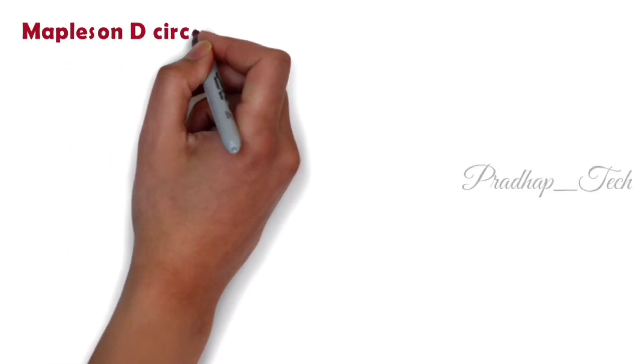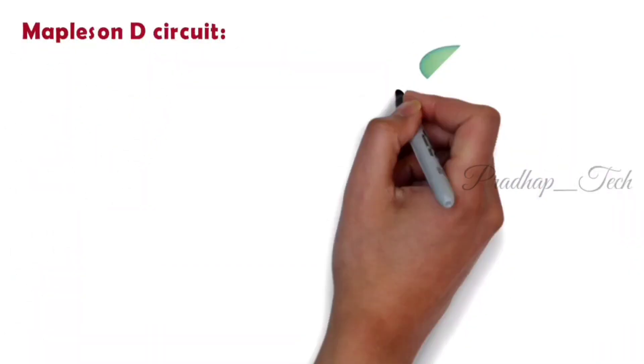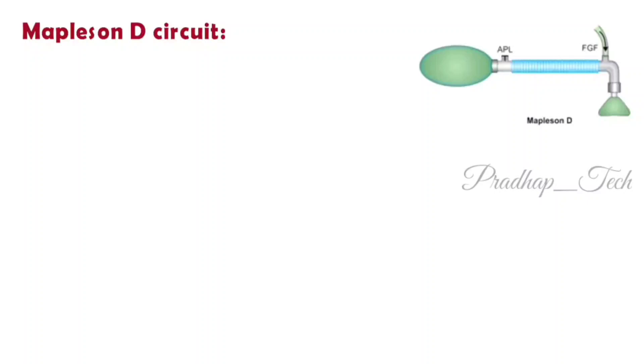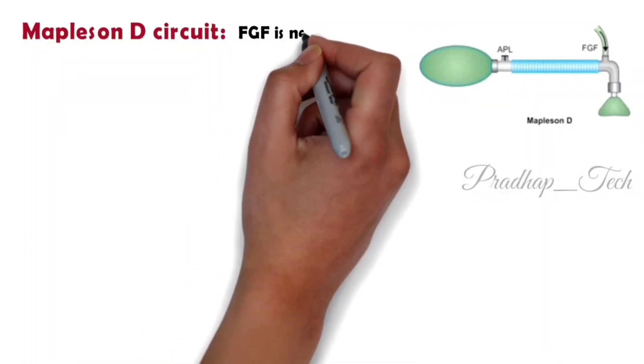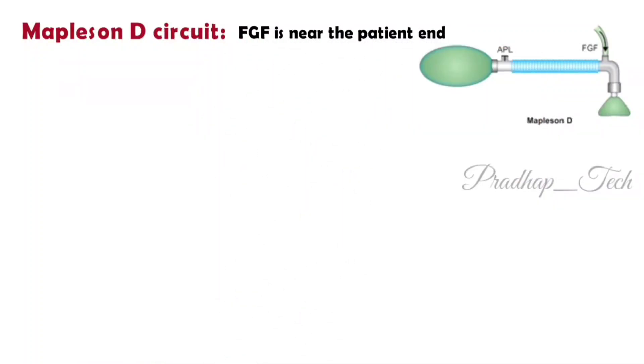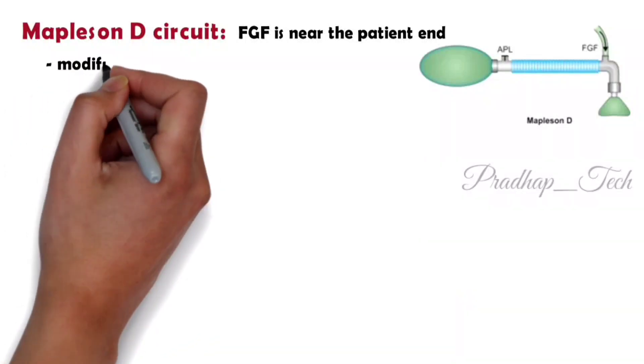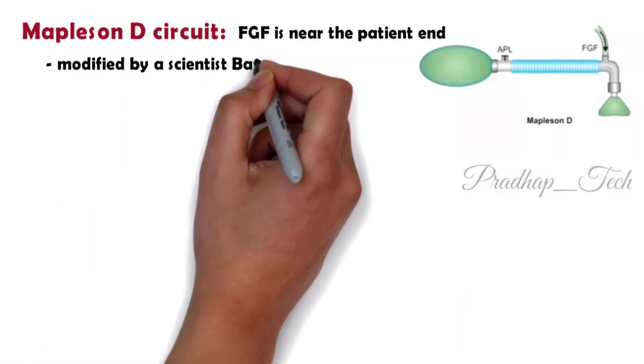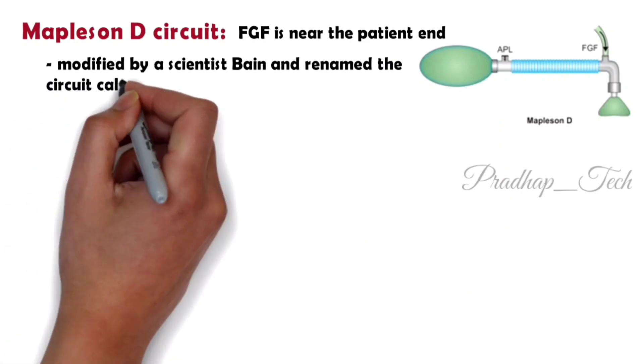Next, we'll see about the Mapleson D circuit. In this circuit, the fresh gas flow is near the patient end. This circuit doesn't offer any advantage. It was modified by a scientist Bain and renamed the Bain circuit.